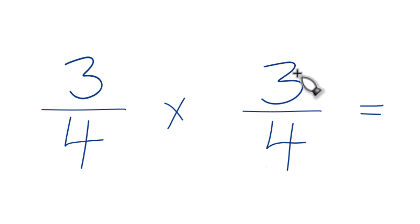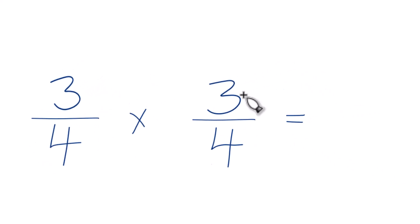Now we take the numerators, multiply them, and the denominators. So 3 times 3, that's 9. And then for the denominator, 4 times 4 is 16.